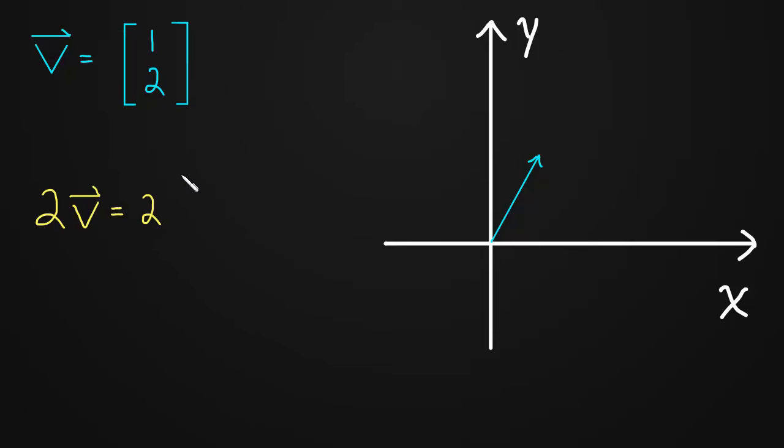Component-wise, this is just 2 times this vector, which we just take that 2 and we multiply each component by it. So this becomes - I'll write out each step here. This is 2 times 1 and then 2 times 2, which of course simplifies to 2, 4.